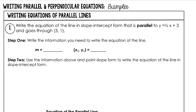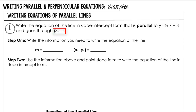For example 1, write the equation of the line in slope-intercept form that is parallel to y equals 1 half x plus 3, and goes through the point (3, 1). For step 1, write the information you need to write the equation of the line. The slope of this line is 1 half. Parallel lines have the same slope, so our slope will also be 1 half. x1, y1 is the point that they want your line to go through, making x1 equal to 3 and y1 equal to 1.